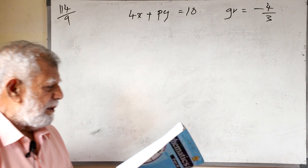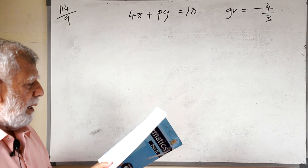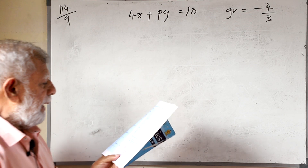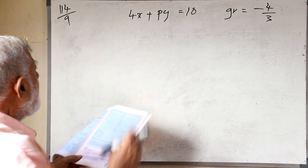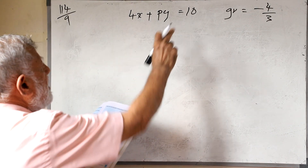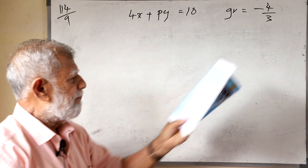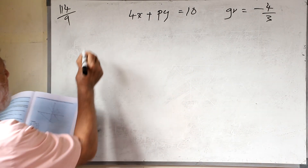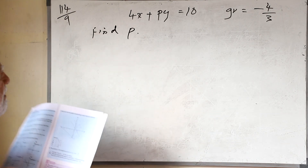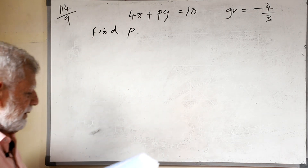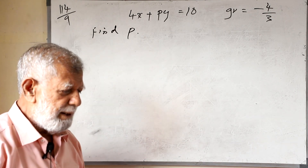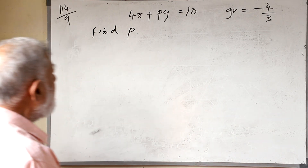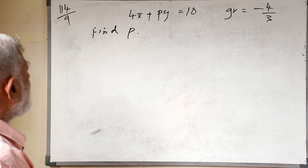Children, we have one more lesson to do — question number 4 in the miscellaneous exercise. The gradient of the line given by 4x + 3y = 10 is minus 4/3, as given. The first question is to find p.